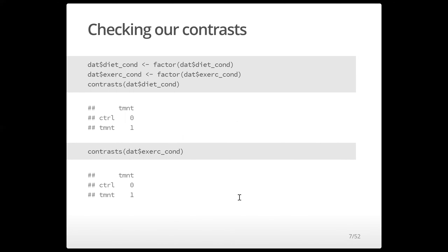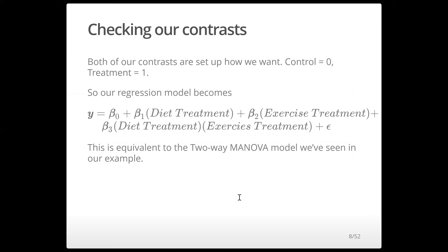I'm going to set my grouping variables to be factors and check their contrasts. We see that 'control' is the reference category and 'treatment' is the non-reference category compared to it. Both contrasts are set up as we want: control is zero, treatment is one. So our regression model becomes Y equals beta zero (the intercept), plus beta one times diet treatment, plus beta two times exercise treatment, plus beta three times diet treatment times exercise treatment, plus error. This is an equivalent model to the two-way MANOVA model we've seen.